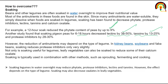Not only is soaking useful for legumes — leafy vegetables can also be soaked to reduce some of their calcium oxalate. If we soak vegetables overnight in water, it will minimize the calcium oxalate anti-nutritional factor. Overall, soaking legumes in water overnight may reduce phytate, protease inhibitors, lectins, and tannin. Soaking may also decrease oxalate in leafy vegetables.